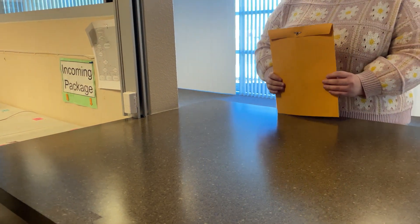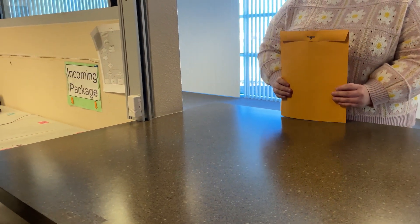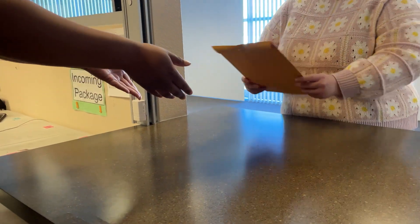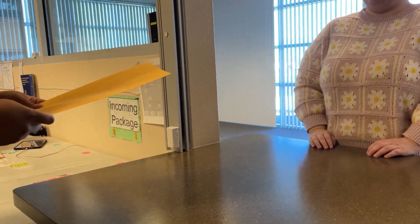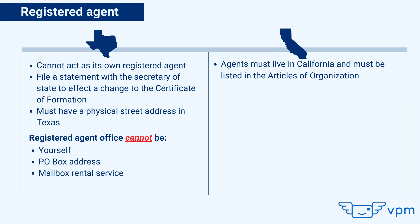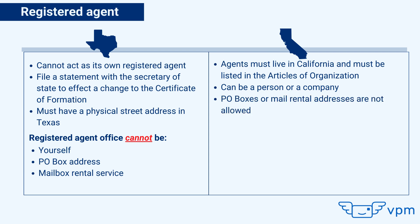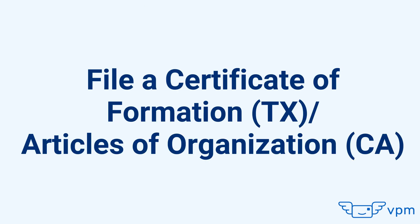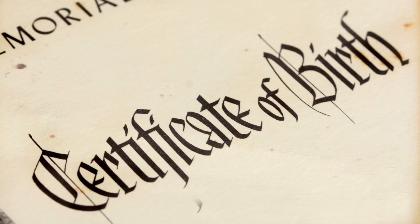Here's how registered agents work in California. California requires you to choose a registered agent who agrees to accept the liabilities of the company if the LLC undergoes a lawsuit. These agents must live in California and must be listed in the articles of organization. The registered agent can be a person or a company. P.O. boxes are not allowed. Unlike Texas, an LLC can act as its own registered agent in California.